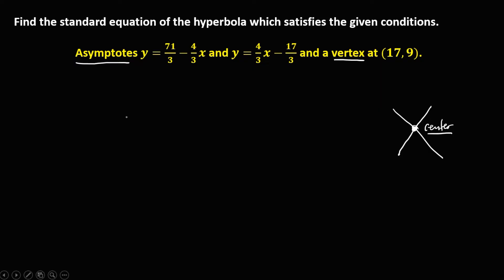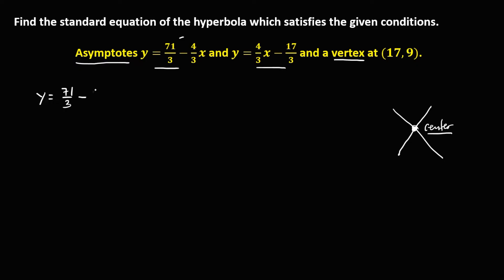Therefore, to find the center of this hyperbola, we're going to use the equation of asymptotes. For the first equation of asymptotes, that's y equals 71 over 3 minus 4 over 3 times x.